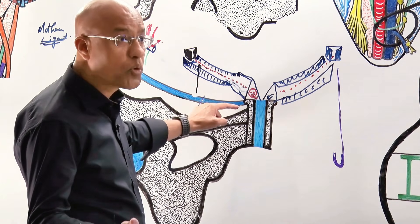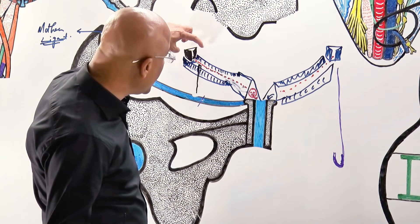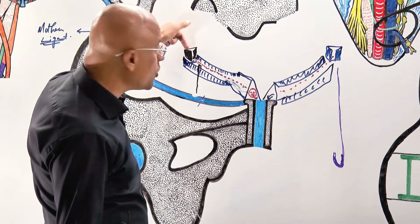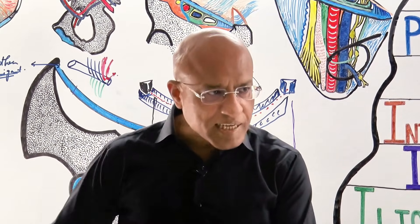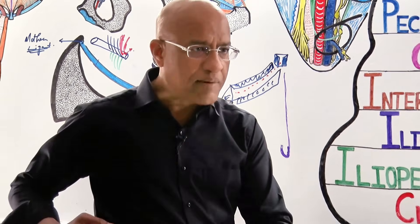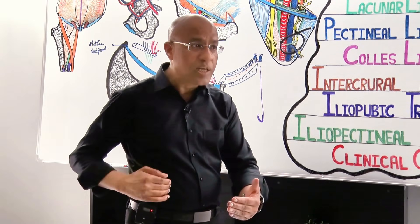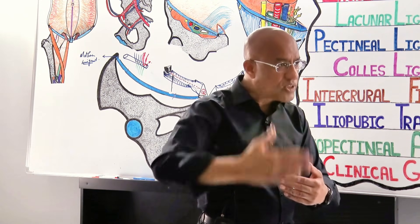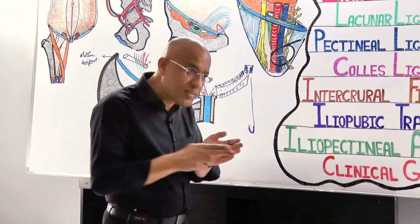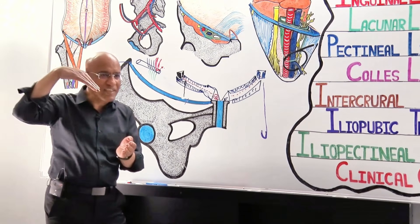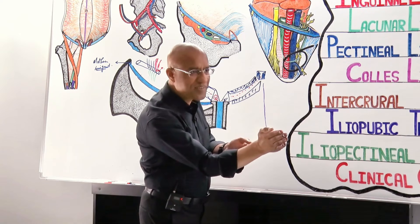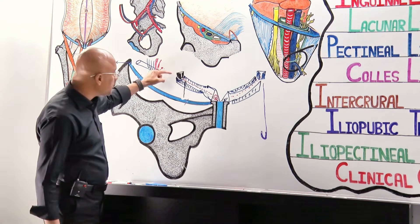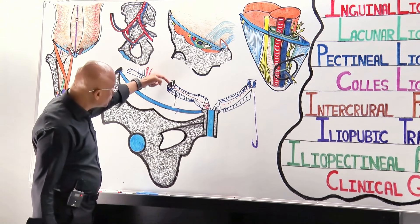This is the deep inguinal ring. When structures go through this, they are going through the fascia transversalis. When moving from inside outward through the abdomen, those structures which were inside the abdomen find a little hole in the fascia transversalis, which is the inner lining of the anterior abdominal wall. Through that little opening they slip into the inguinal canal. Then they glide downward and a little forward, and they exit at the superficial inguinal ring. So this is the deep inguinal ring, and here is the superficial inguinal ring, and through this it is coming.